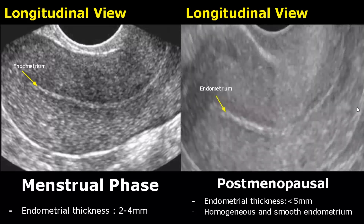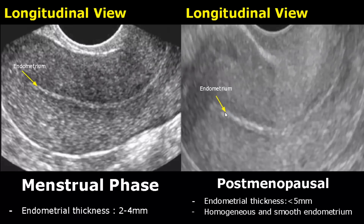Here we have an image of the endometrium in a postmenopausal woman. There are no more menstrual cycles, so the endometrial thickness is usually less than 5 mm, and it will appear smooth and homogeneous.